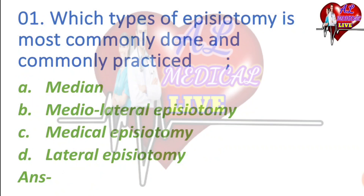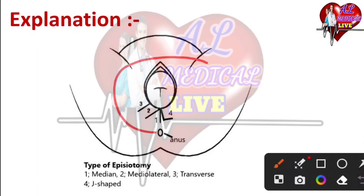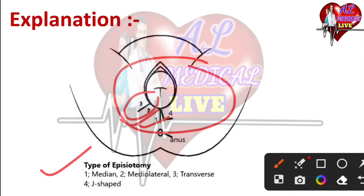When you have full experiments, when the child is delivered, we prefer the mediolateral episiotomy. You also have to check in the second stage of labor. The types of episiotomy are: median, mediolateral, transvol, and J-shaped. We have four different types to look at.